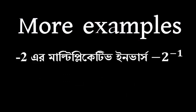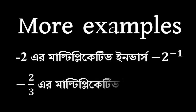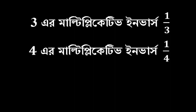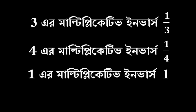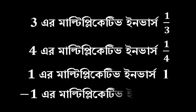More examples: negative 2's multiplicative inverse is negative 1 half. Negative 2 thirds' multiplicative inverse is negative 3 halves. 3's multiplicative inverse is 1 third. 4's multiplicative inverse is 1 quarter. 1's multiplicative inverse is 1. Negative 1's multiplicative inverse is negative 1.